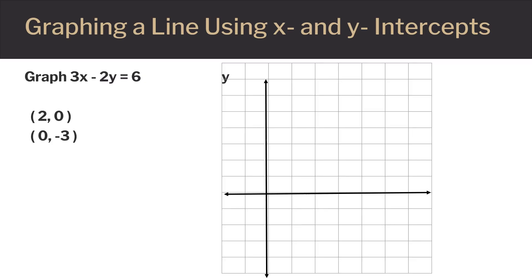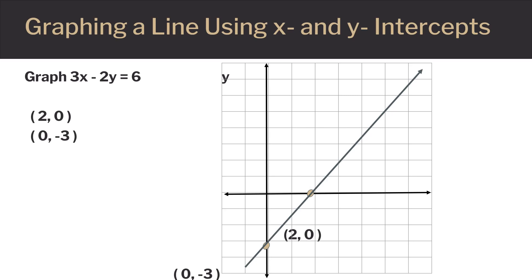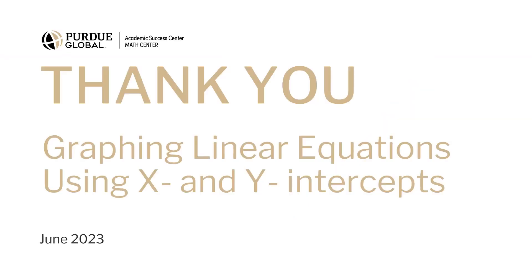We're ready to draw a graph. We'll plot the point (0, -3) — this is on the y-axis and is our y-intercept. Then we plot the point (2, 0), which is our x-intercept. We connect the two points with a straight line, and this is the graph of the equation 3x minus 2y equals 6. Thank you for watching this presentation on graphing linear equations using x and y intercepts.